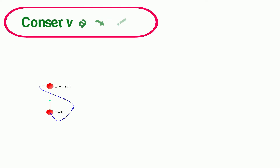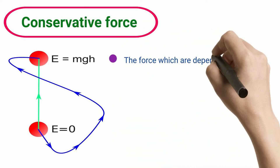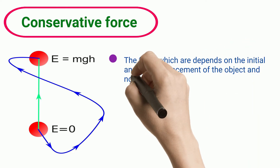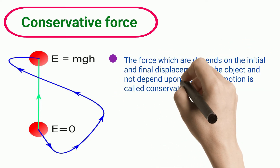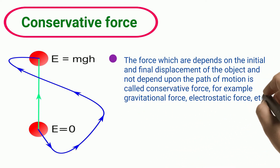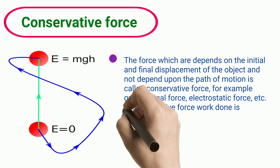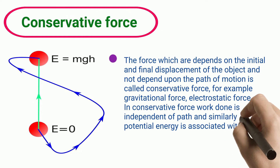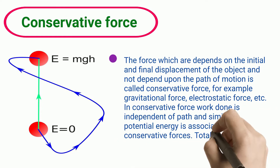Conservative Force. The forces which depend on the initial and final displacement of the object and not on the path of motion are called conservative forces — for example, gravitational force, electrostatic force, etc. In conservative forces, work done is independent of path, potential energy is associated with them, and total energy remains constant.